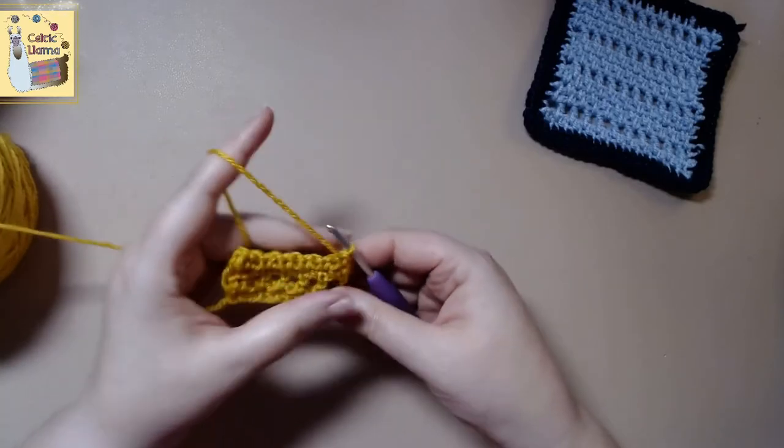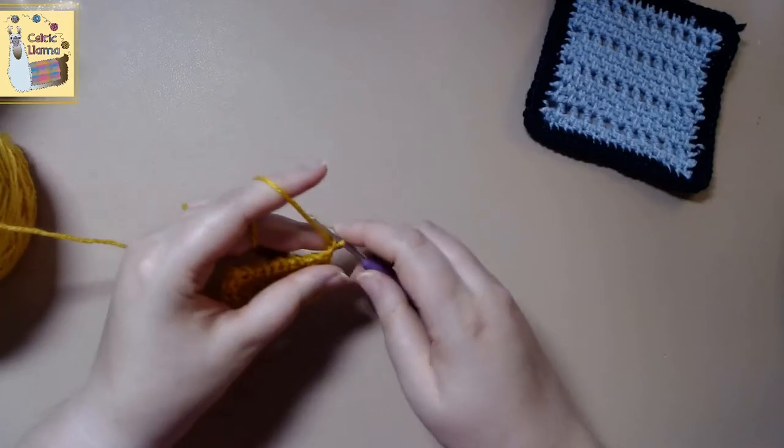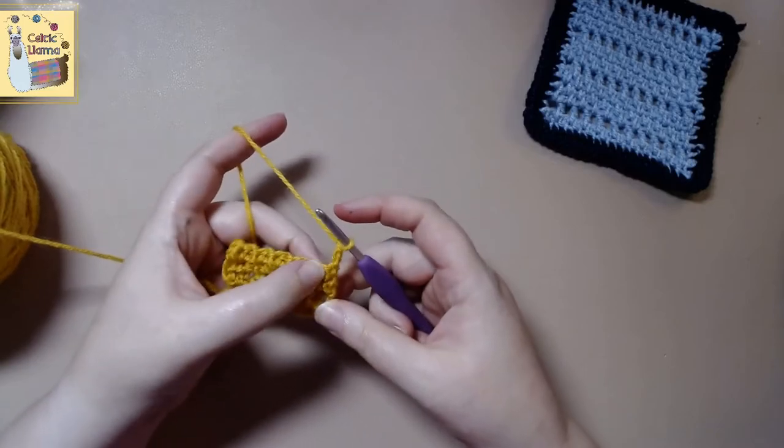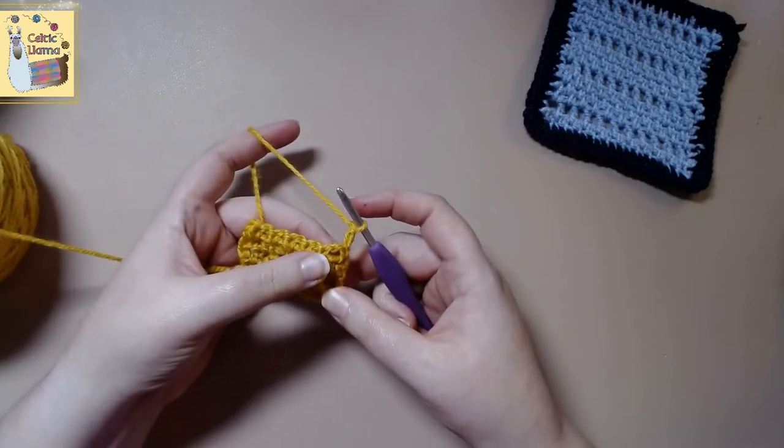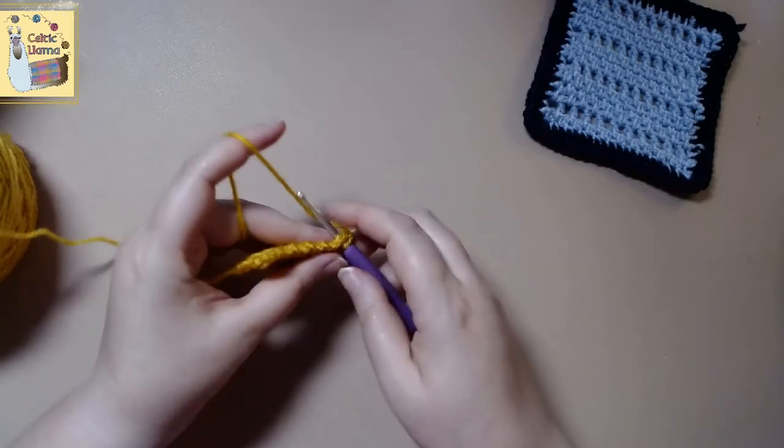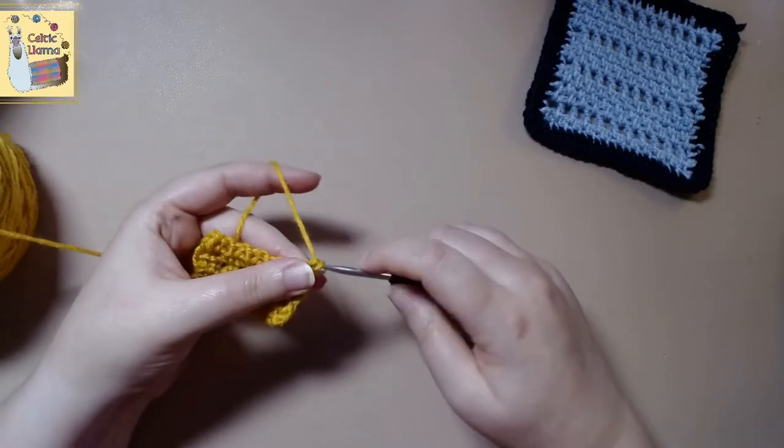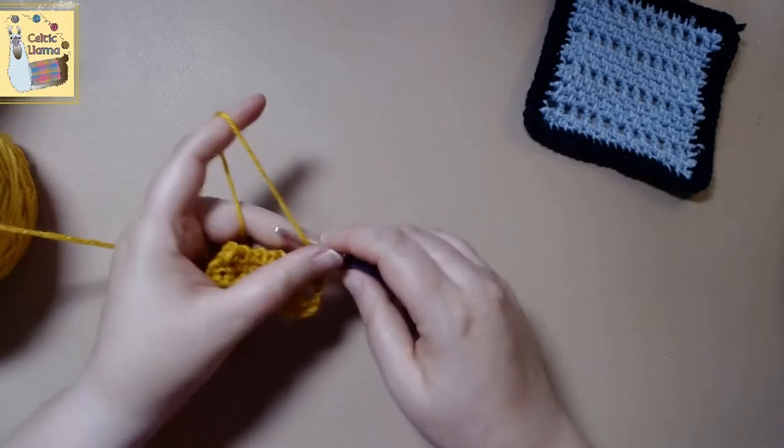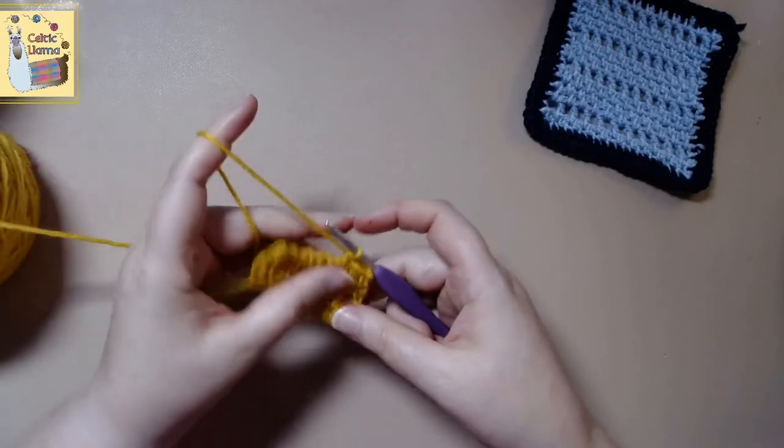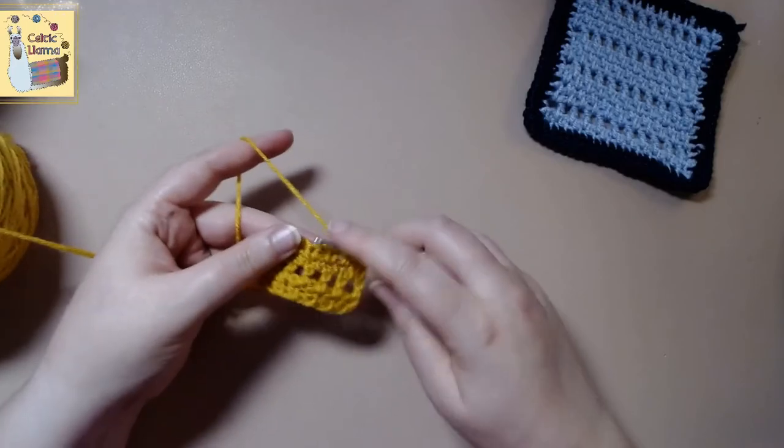Alright, we can see it really coming together now. So chain one, two. And into the next space. So you always want to remember when you're going up for the single crochet rows that you're chaining two.